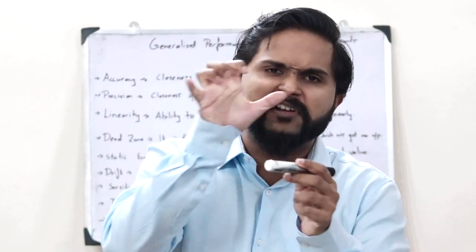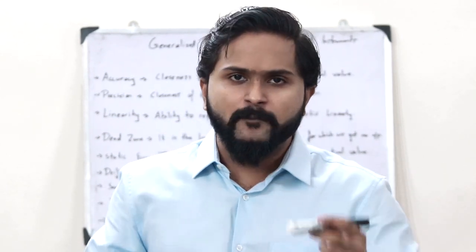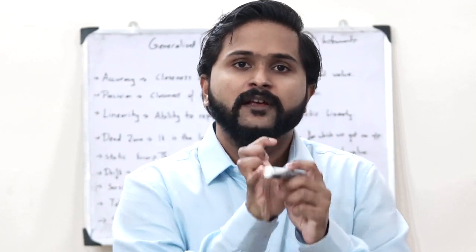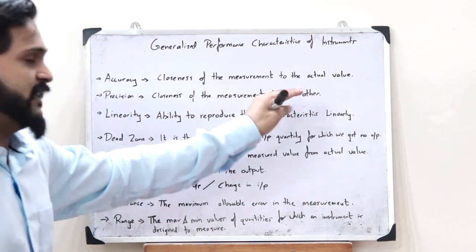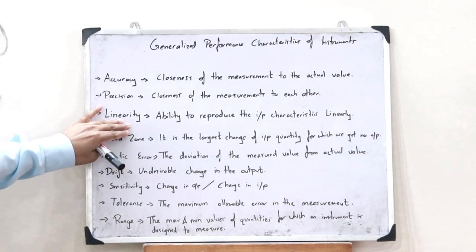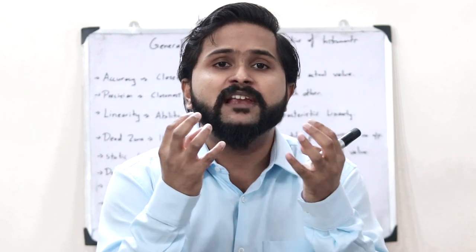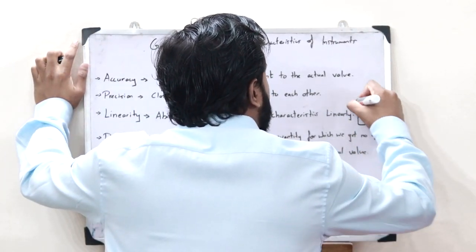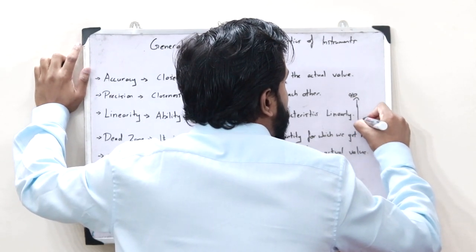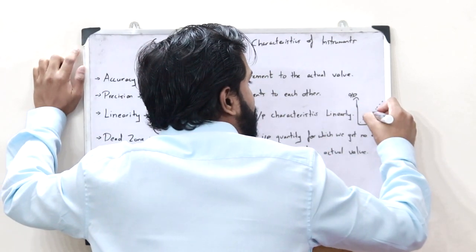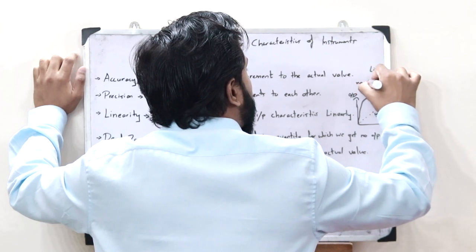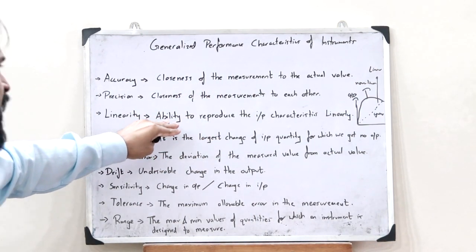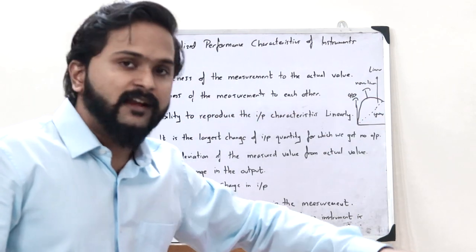Now if I take multiple readings of the length of this particular pen with a particular instrument, precision is defined as the closeness of these multiple readings to each other. Next, linearity is defined as the ability of a particular instrument to reproduce the input characteristics linearly — that is, if we plot the input-output characteristics, a linear characteristic is a straight line of the form Y = MX.